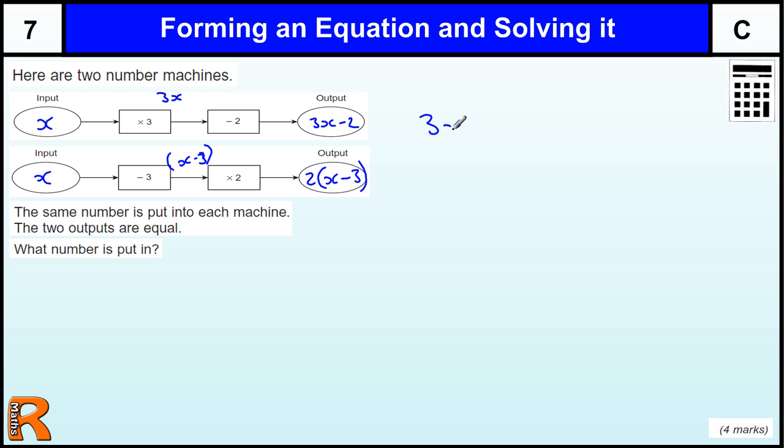So these two things are equal, so this is our equation. 3x minus 2 equals 2 lots of x minus 3.